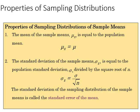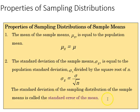These are the properties of sampling distributions. The first important property is that the mean of sample means is equal to the population mean — that's if we take an infinite number of samples. The standard deviation of the sample means is equal to the population standard deviation divided by the square root of n, where n is the number of samples. This standard deviation of the sampling distribution is called the standard error of the mean, which will be an important concept in future applications.